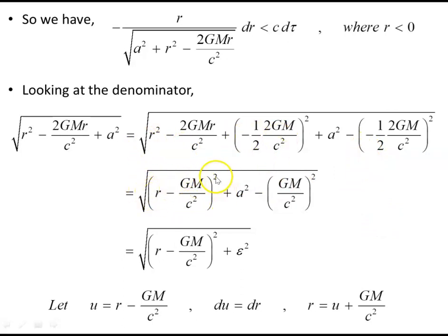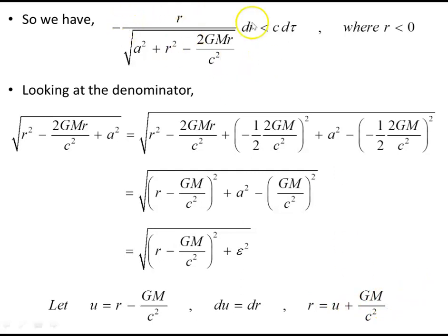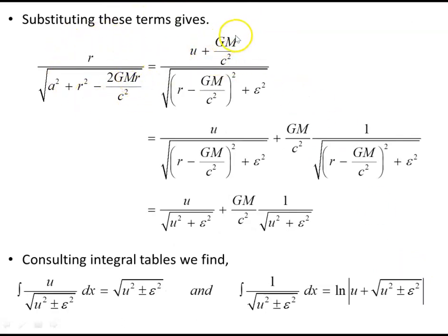We call a² − (GM/c²)² = ε². Then we make the substitution u = r − GM/c², so du = dr and r = u + GM/c². Substituting these terms gives (u + GM/c²) over the square root of u² + ε², which we can split into u over √(u² + ε²) plus GM/c² times 1 over √(u² + ε²). This gives us a simplified form ready for the integral tables.